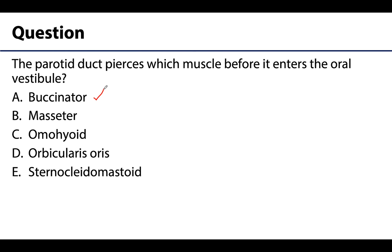The buccinator is a muscle of facial expression, which we will discuss in more detail in the next session. The masseter muscle is a good distractor as the parotid duct does have a close relationship with it, but the duct runs superficial to the masseter and does not dive deep. The omohyoid and sternocleidomastoid are both strap or neck muscles, so both are incorrect. The orbicularis oris surrounds the entire mouth region — close, but not the correct answer. That wraps us up for this video — feel free to reach out with any questions and have a wonderful day!